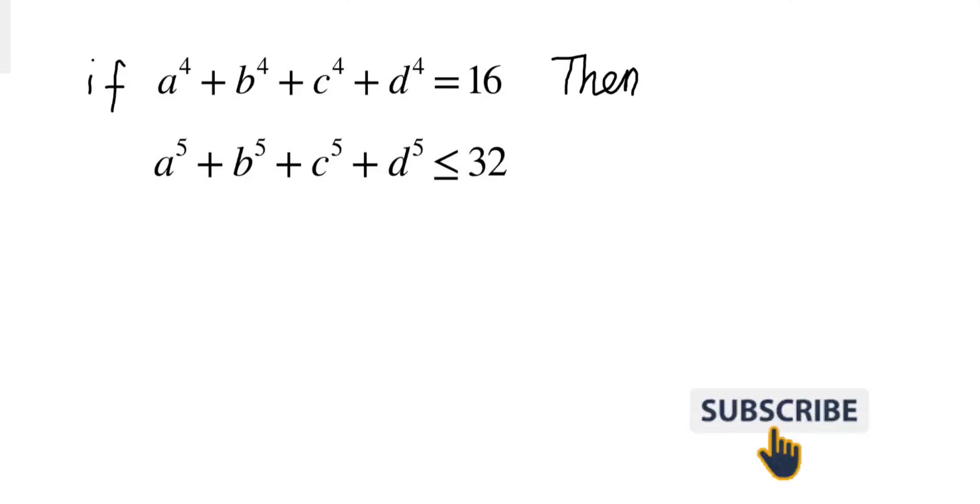is equal to 16, then prove that a⁵ plus b⁵ plus c⁵ plus d⁵ is less than or equal to 32.